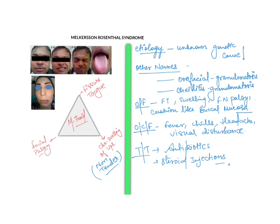Hi everyone, so now we are going to talk about Melkersson-Rosenthal syndrome. Melkersson-Rosenthal syndrome is also said to be cheilitis granulomatosa, or you can also say this to be orofacial granulomatosis. These are the other names for this syndrome. Now coming to the etiology, there is basically an unknown genetic cause which could be responsible.